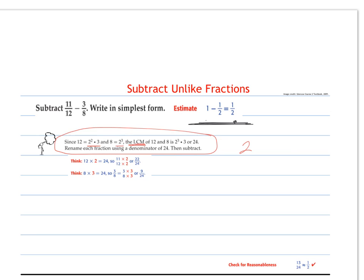So twelve's primes are two squared times three. Eight's primes are two to the third. Remembering we're finding a least common multiple, in this case for least common denominator, we take each number that comes up to the highest power, so we're really multiplying eight times three, which is twenty-four. So that means twenty-four is the smallest number both twelve and eight multiply to.